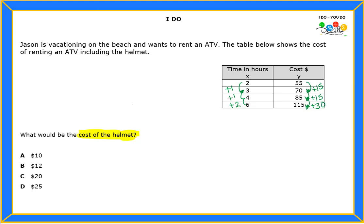We're gonna prove right now that even though the last interval doesn't give me a 1 and a 15, I can eventually get the number. My question is: I'm looking for the change of Y over the change of X, which is the constant rate of change. The change in Y was 15, and the change in X was 1. So my answer is 15 over 1.